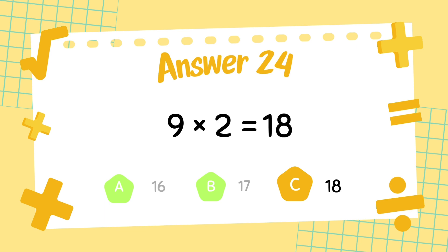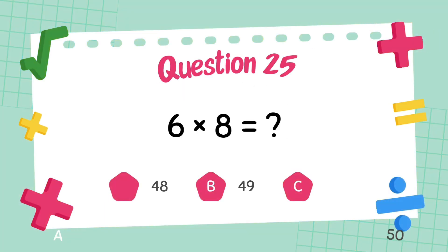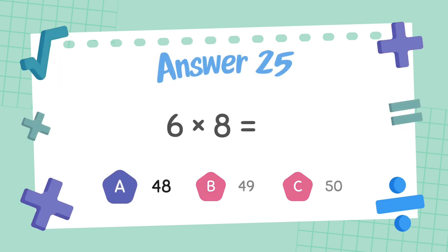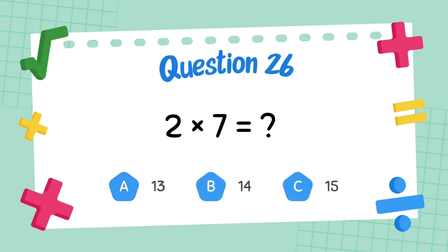What is 6 multiply 8? The answer is 48. What is 2 multiply 7? The answer is 14.